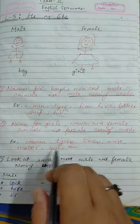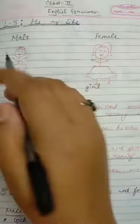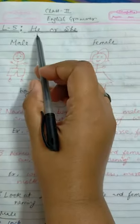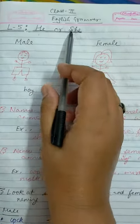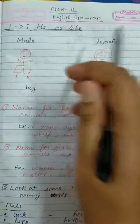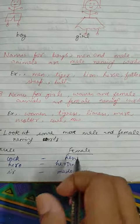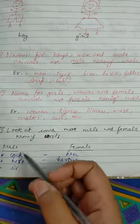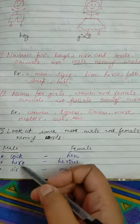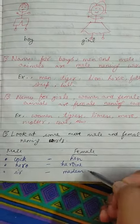Mare, mother, cow, etc. We use 'he' for male naming words and 'she' for female naming words. Look at some more male and female naming words: these are male naming words and these are female naming words.